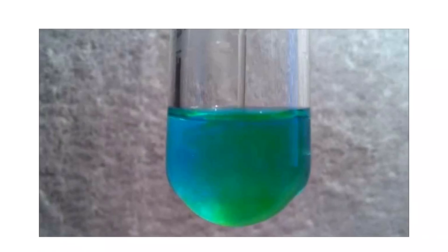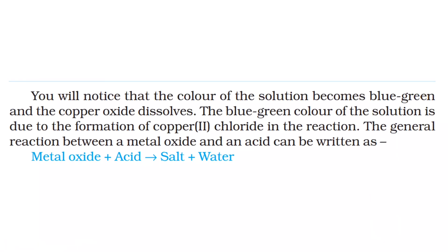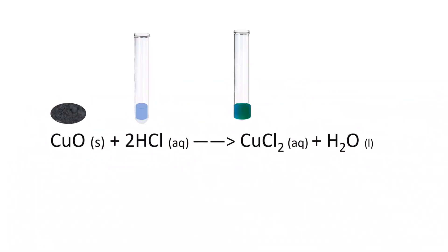That new substance is copper chloride. And as you know — and for new subscribers joining us today — when we react metal oxide with acid, it produces salt and water. You can see the reaction on screen. So copper oxide has reacted with HCl to produce copper chloride and water.